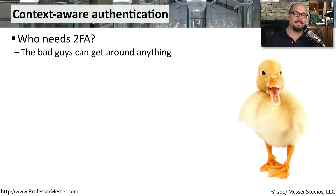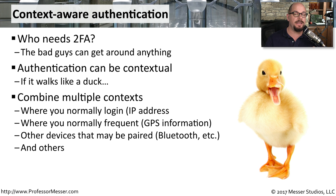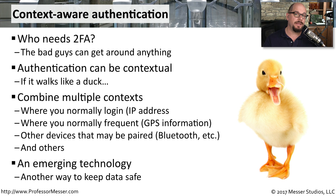Another authentication check that goes beyond two-factor authentication is context-aware authentication. This is where you check for other types of access indicators to determine if the device is really in the hands of the right people. For example, you could check if the IP address someone is authenticating from matches a previous IP address, if it's at a GPS location common for this device, or if a set of Bluetooth devices that is always paired with this device are in place. This may not qualify as the only type of authentication, but it could be another check to help determine if the device is in safe hands.